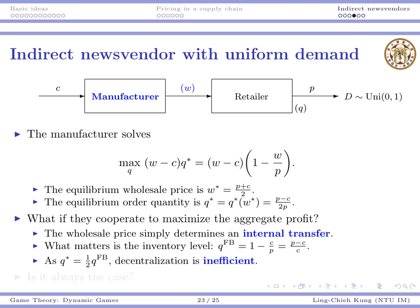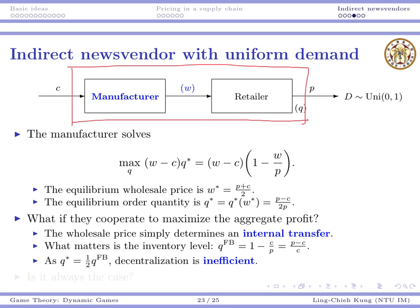For the integrated system optimal inventory level, we treat c as the input and p as the output of the whole system. We group the two firms into a single system — a simple supply chain. The input is c, the output is p, and these are the parameters for the integrated newsvendor problem.